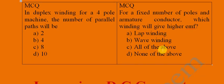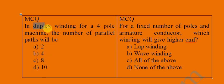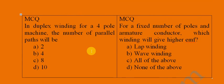An MCQ example: for a duplex winding with a 4-pole machine, the number of parallel paths will be — 2, 4, 8, or 10? In duplex winding the multiplicity m = 2, and the number of poles = 4, so A = 2 × 4 = 8. The answer is 8.